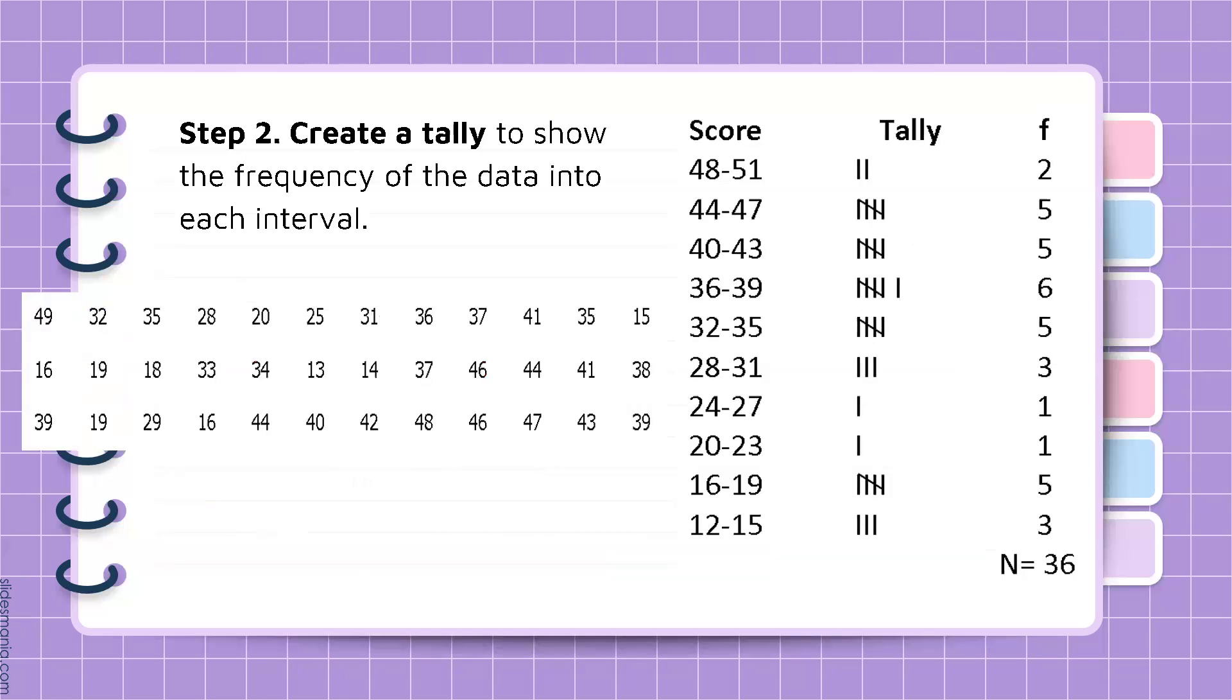Next step is to create a tally to show the frequency of the data into each interval. So we have, for the class interval 12 to 15, we have 3 scores. 16 to 19, we have 5. 20 to 23, 1. 24 to 27, 1 score. 28 to 31, 3. 32 to 35, 5 scores. 36 to 39, 6. 40 to 43, 5. 44 to 47, 5. And 48 to 51, 2. For a total of 36 scores.